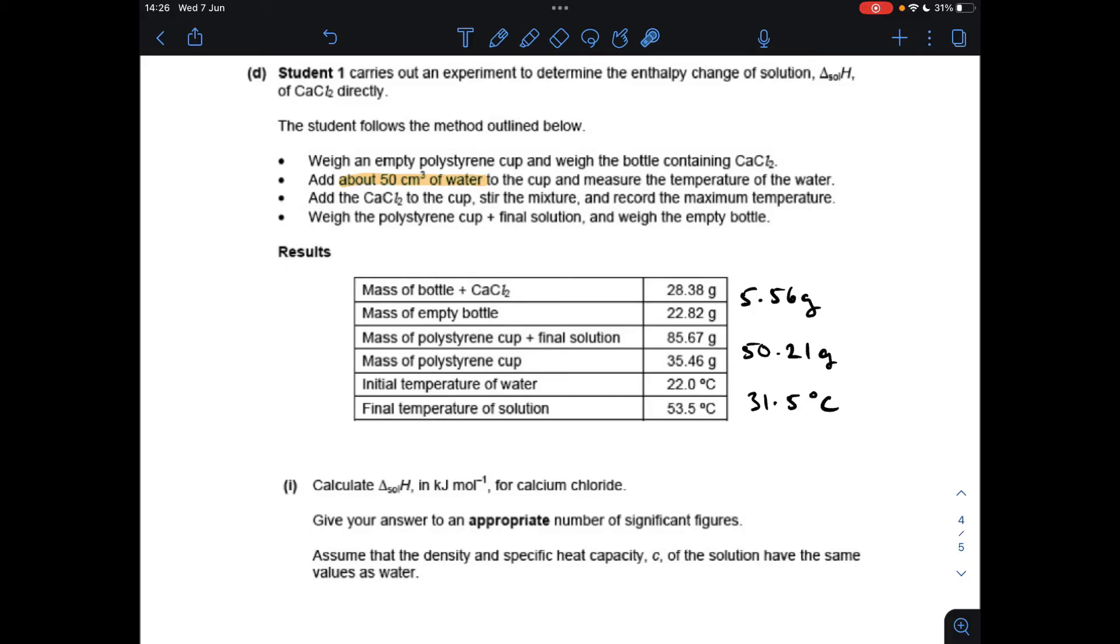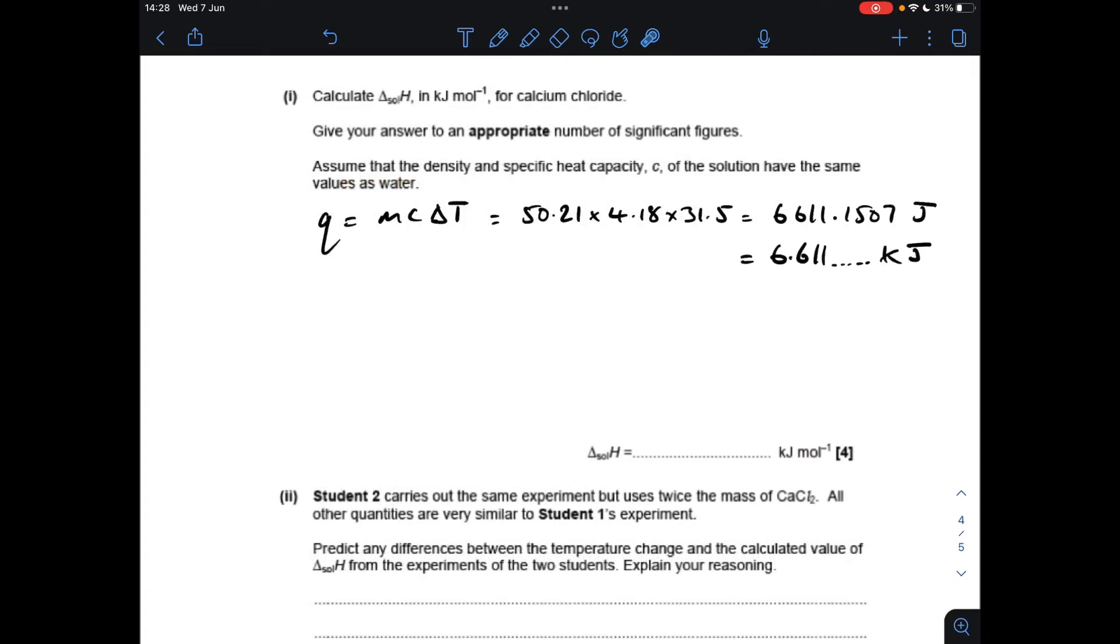And obviously the delta t is the difference between those two, 31.5 degrees C. So there's my q equals mcΔt calculation, so I'm getting that many joules, which we need to put into kilojoules because the final answer needs to be in kilojoules per mole. So 6.61, I've left the rest of the number in the calculator, kilojoules.